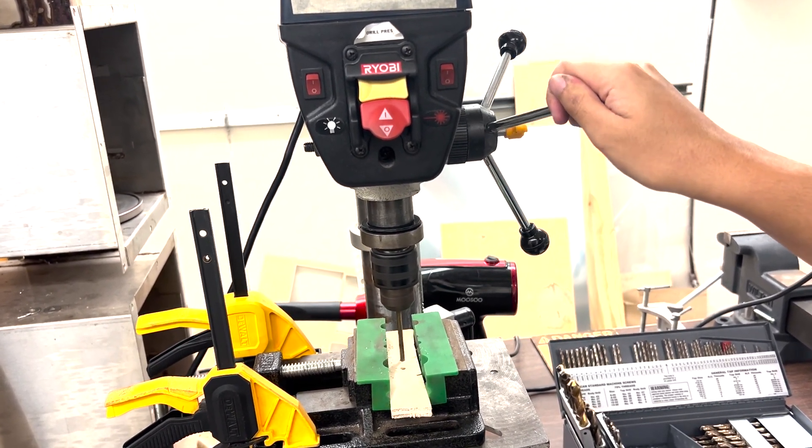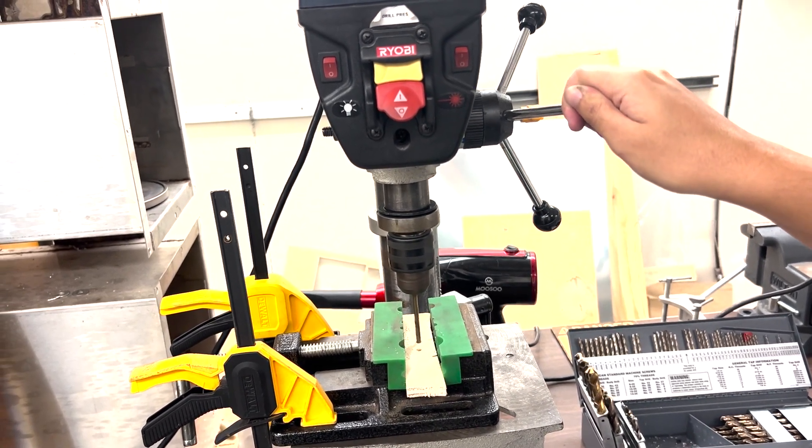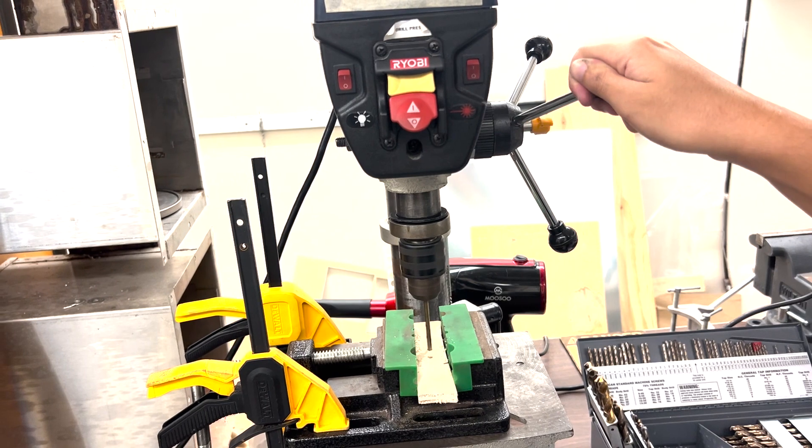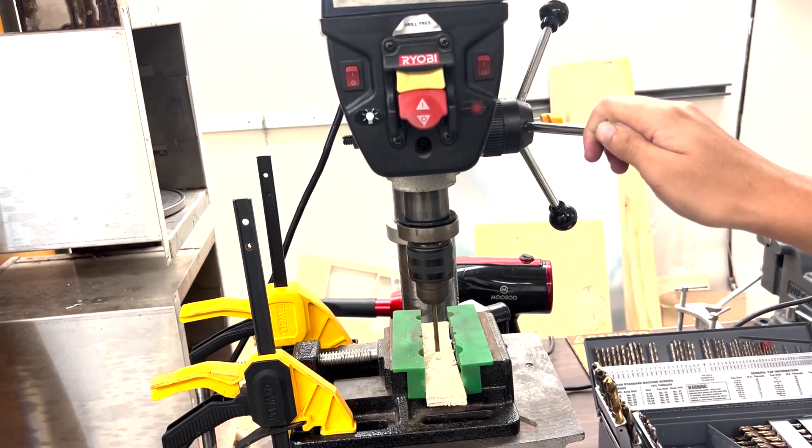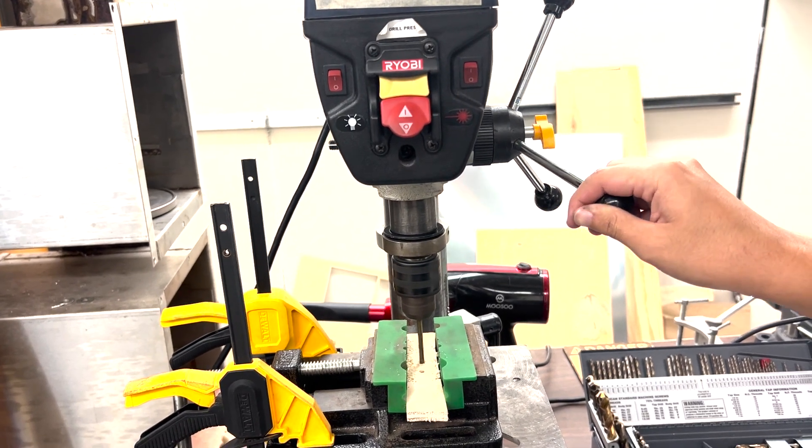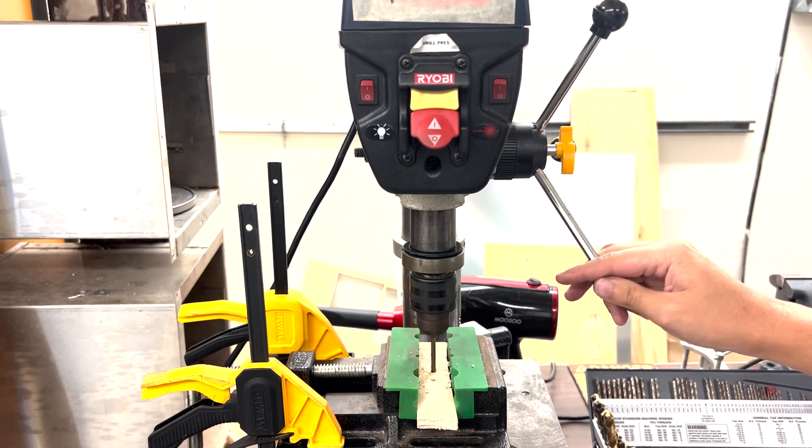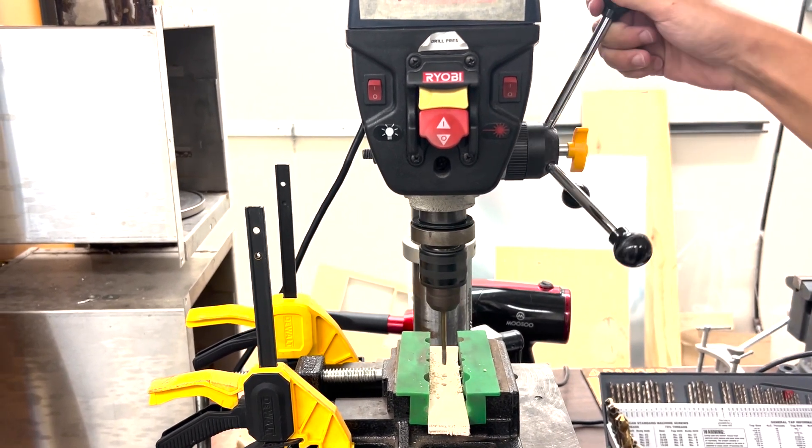You want to use a method called peck drilling, which is drilling in smaller increments. This allows all the material to come up as you start to drill down. As you get closer to the end, you want to lighten up. Once you feel that you hit all the way through, you want to go down and all the way out to clear out the hole.